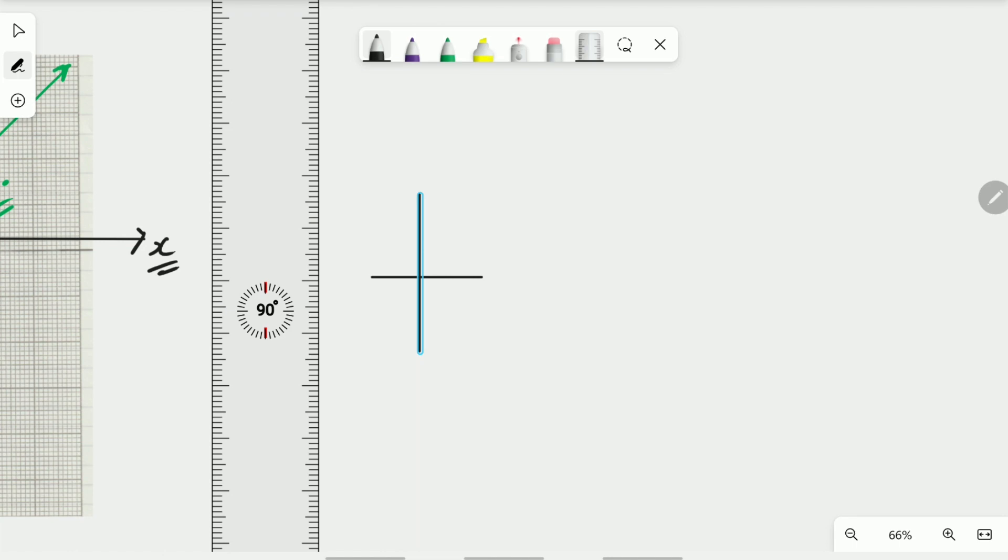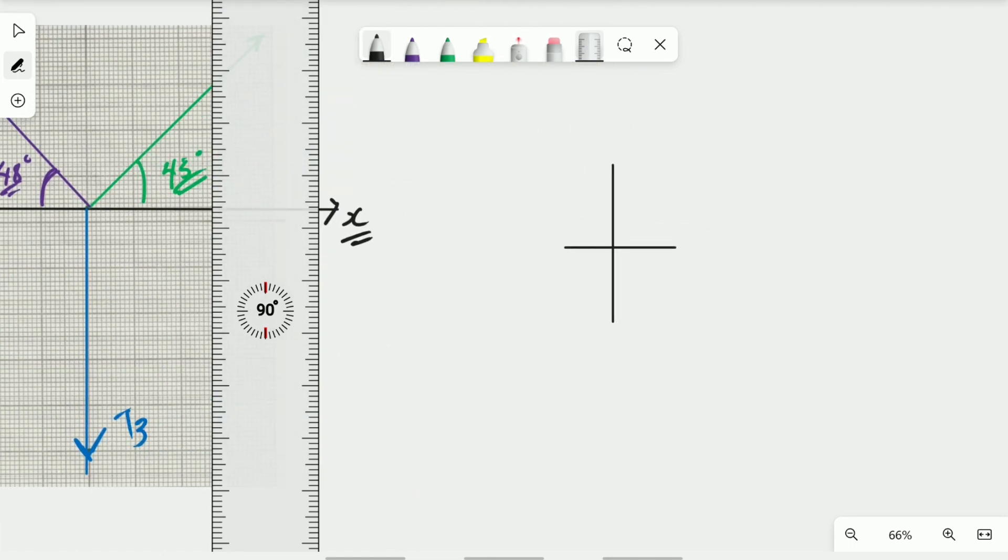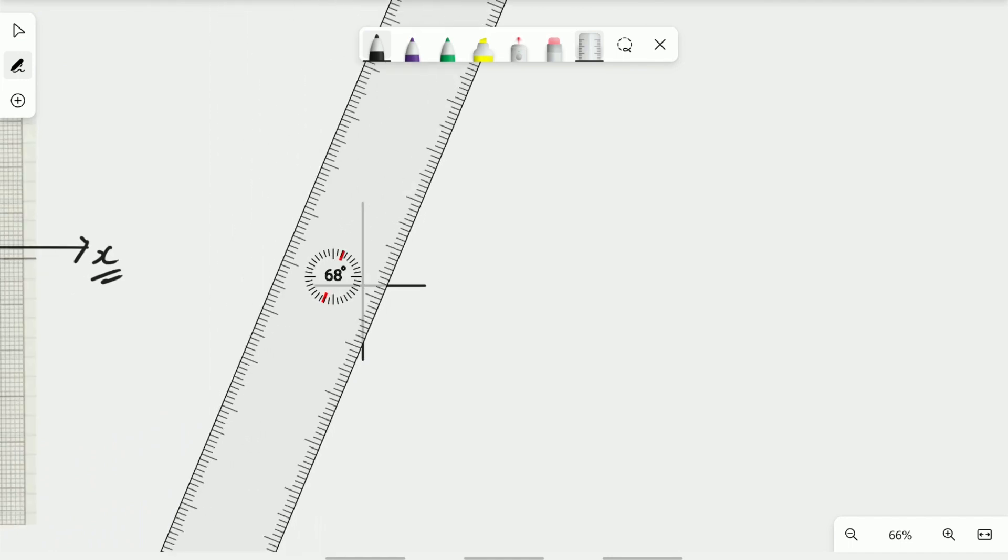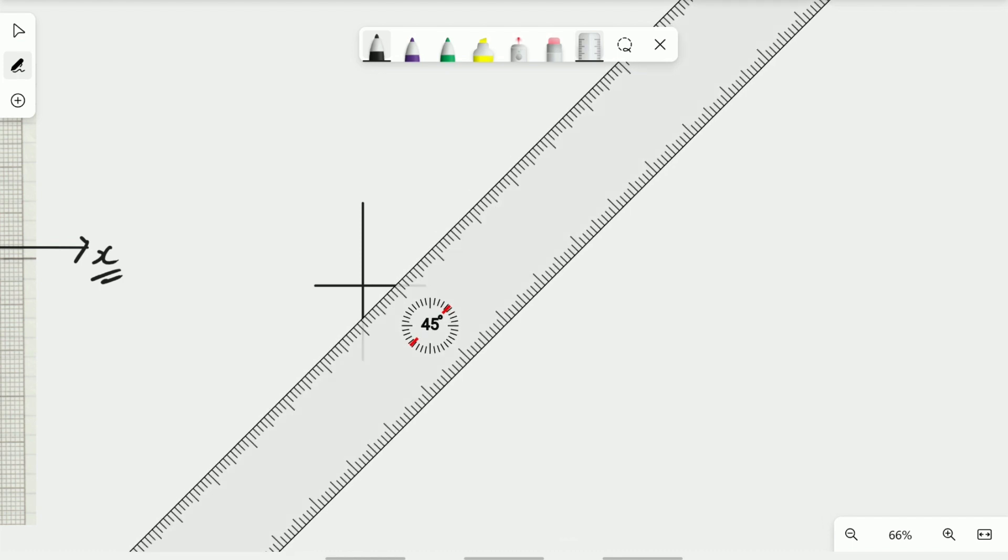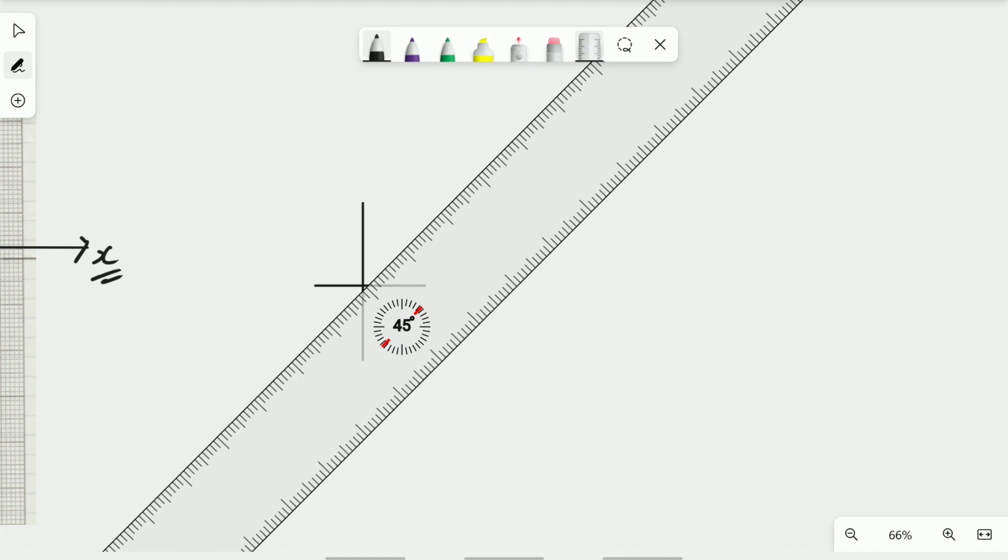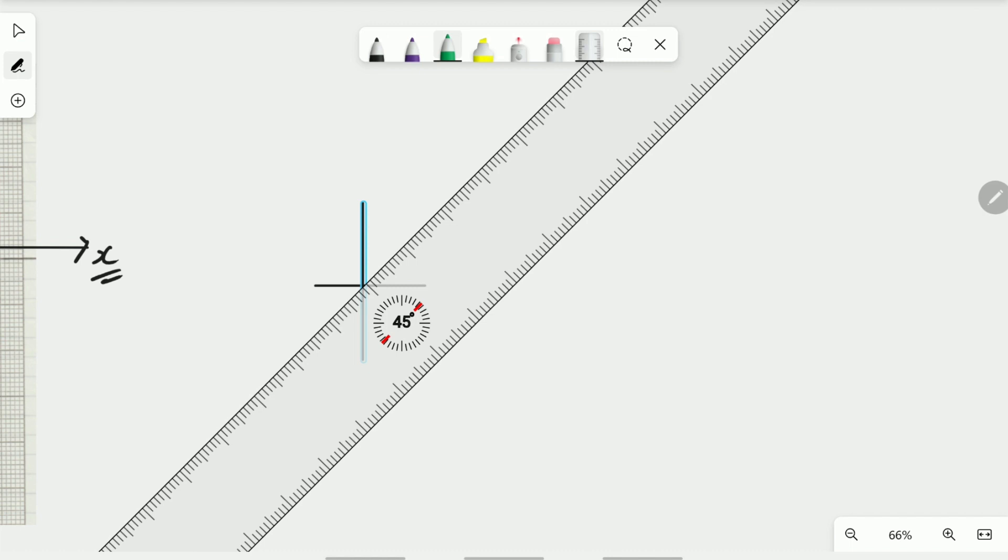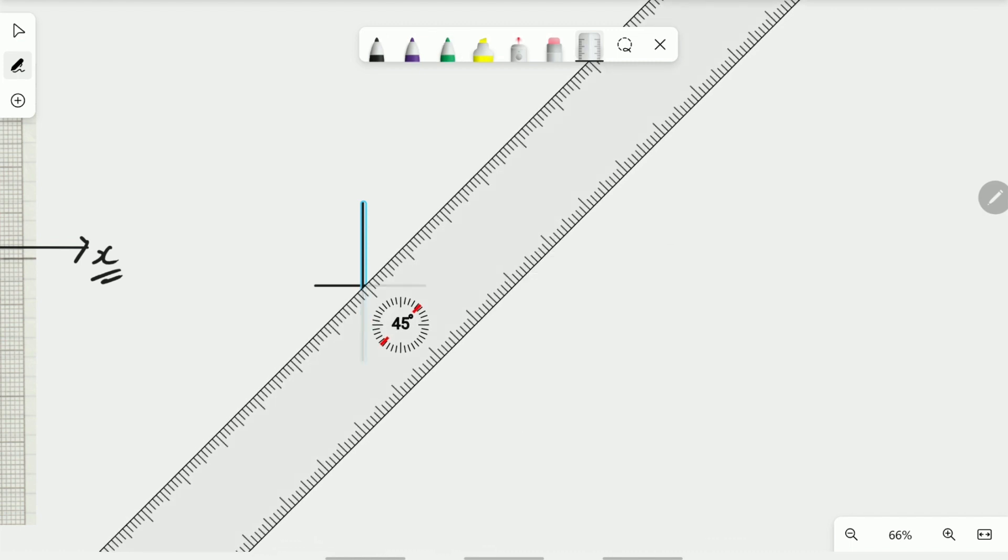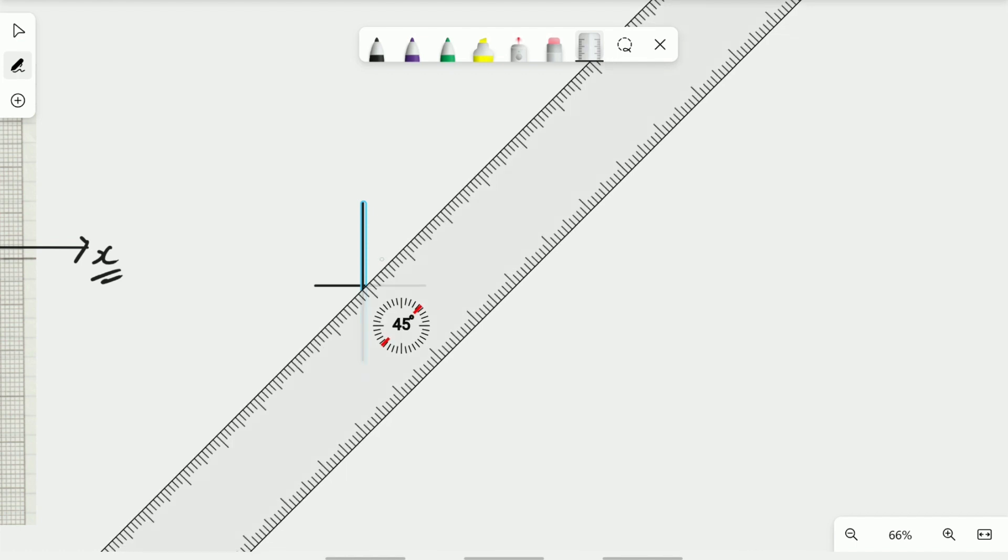Now I need to draw a vector who is 0.2 newton at 45 degrees. 0.2 newton, that means it is going to be 2 cm at 45 degrees. So you make sure you get the angle, and then you go to the scaling. Starting from there, I need 2 cm. We are going to draw from there. This must be as accurate as you can, otherwise the result may not be exactly the same. We are going to start from there, there is 1 cm and there is 2 cm.